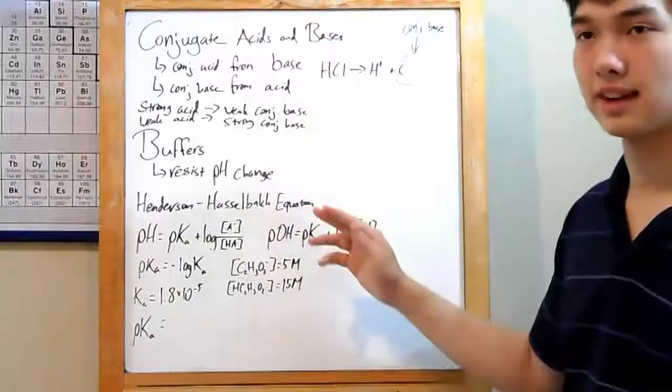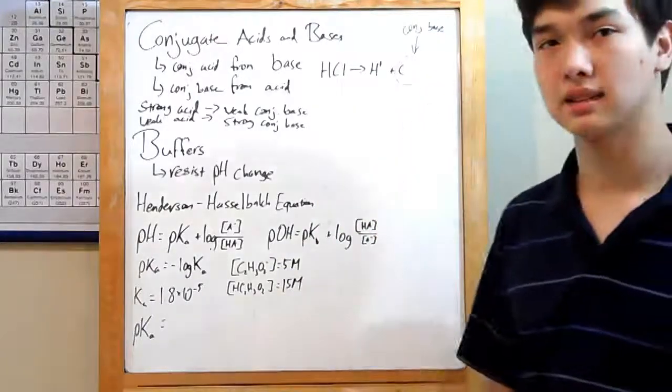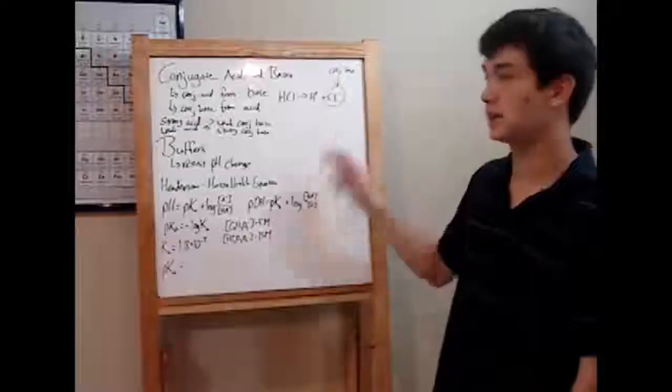For instance, over here we have hydrochloric acid dissociating into H plus and Cl minus. The Cl minus is the conjugate base. It's basic because it can accept H plus ions.